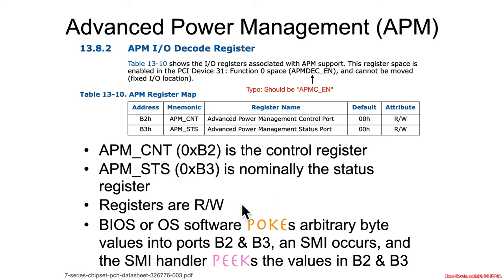Both of these registers are read-write, and how they tend to work is that a BIOS or operating system will poke some arbitrary bytes into each of these — they're each one byte large. It'll cause an SMI, and then the SMI handler will peek at the values of B2 and B3 and have a switch statement: if B2 equals 0, do this; if it was 1, do this; if it was 3, do this. So basically there's a big switch statement on the other side where these are treated as commands given to the SMI handler by the OS or BIOS.